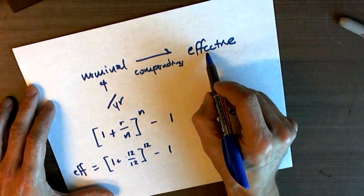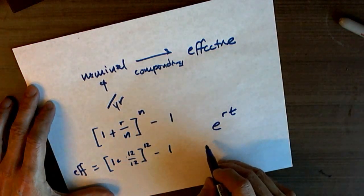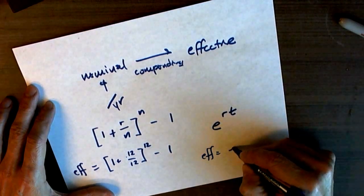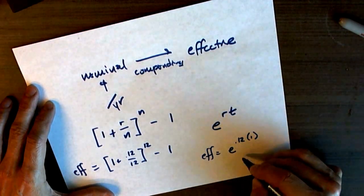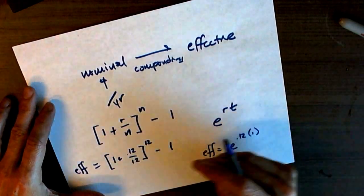So if we were going to compute the effective rate for a nominal rate of 12% a year, compounded continuously, it would be e to the 0.12. Work that out and send me the answer on Slack.